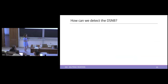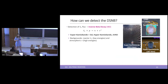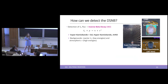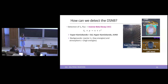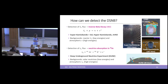The DSNB flux hasn't been discovered yet, so how can we detect it? For the electron anti-neutrino flux, we can use inverse beta decay, which is the main channel used by Super-Kamiokande plus gadolinium, already running and releasing results. Hyper-Kamiokande and JUNO will also use this channel to detect the DSNB flux. For the electron neutrino flux, the DUNE experiment will detect it through neutrino absorption in liquid argon.